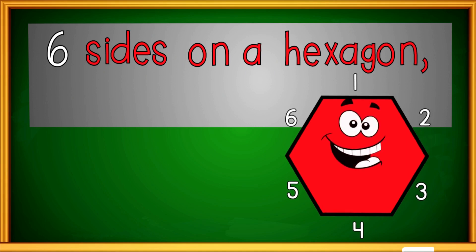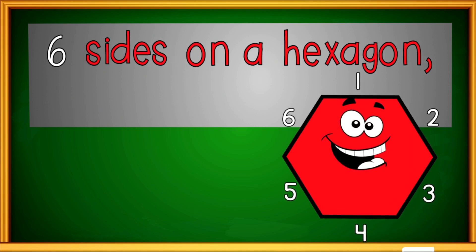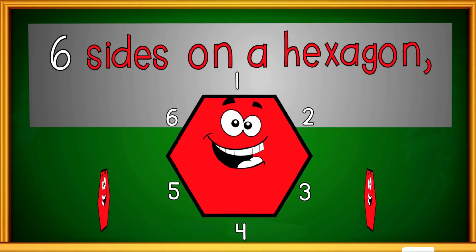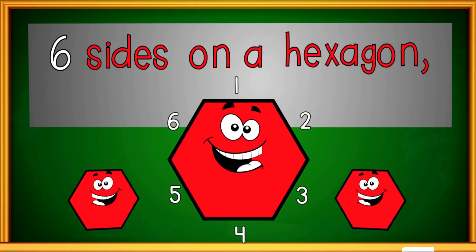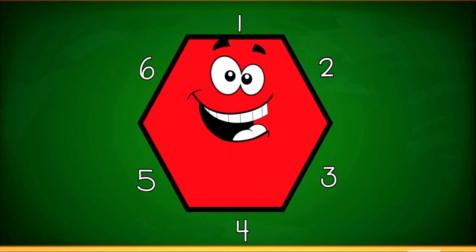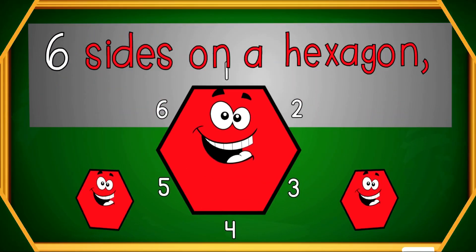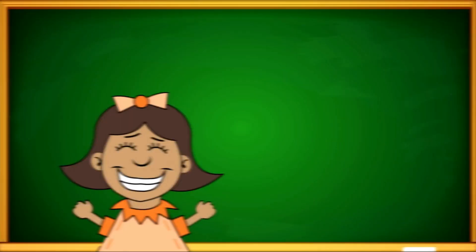There are six sides on a hexagon, six sides on a hexagon. One, two, three, four, five, six — six sides on a hexagon.